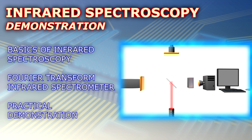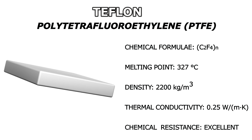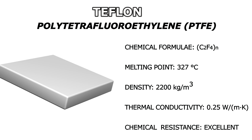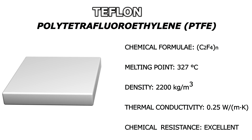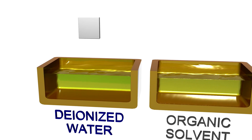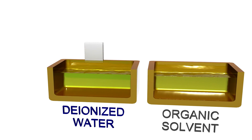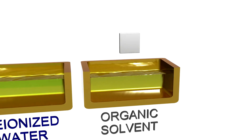Now that we have covered the basics of infrared spectroscopy, we will do a real measurement with an infrared spectrometer. Our sample is a piece of Teflon, which is used in many applications all over the world due to its high chemical resistance. The first thing we need to do is to clean the sample from possible contaminations with deionized water and organic solvents.